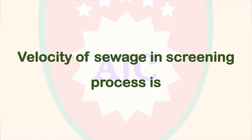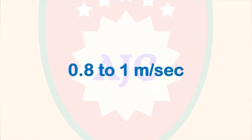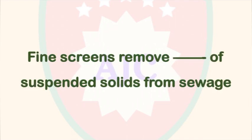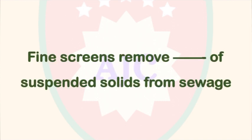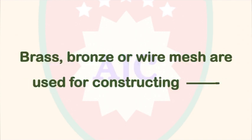The velocity of sewage in the screening process is maintained at 0.821 meters per second. Fine screens remove suspended solids from the sewage. Brass, bronze, and wire mesh are the materials used for constructing fine screens.